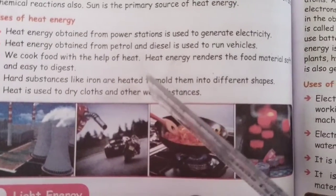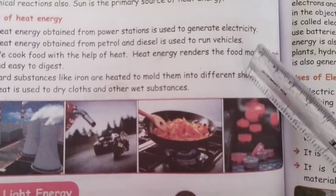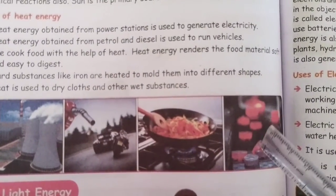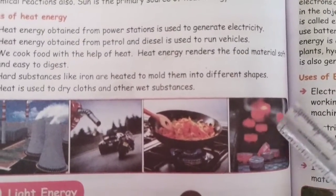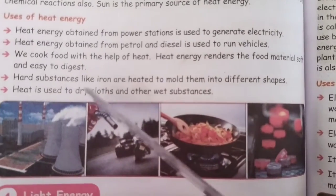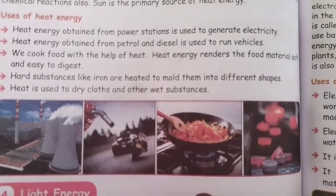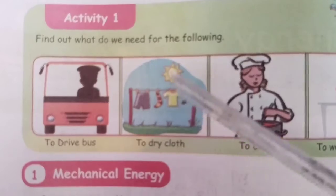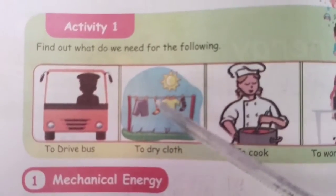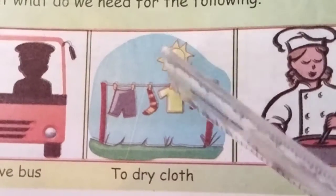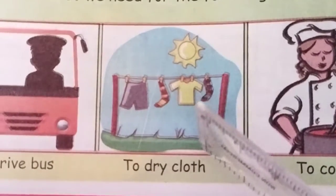Very hard metals like iron are heated and melted into different shapes. When iron and gold are heated, they melt and change into different shapes. So heat energy is used to melt metals. Heat is also used to dry clothes and other wet substances. Wet clothes change into dry clothes because of heat from the sun, so heat energy from the sun is used to dry clothes.